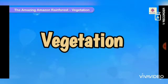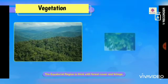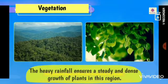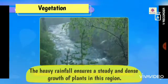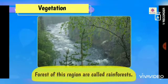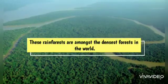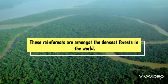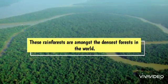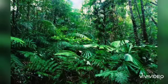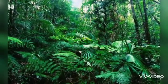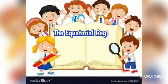Now we can learn the vegetation of the equatorial region. In this region you can see thick growth of plants because they receive heavy rainfall. So forests of this region are called rain forests. Rainforests in the equatorial region are among the densest forests in the world.